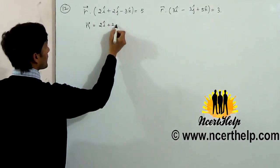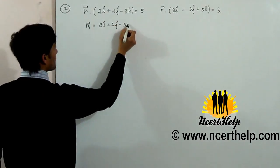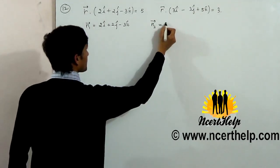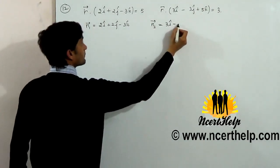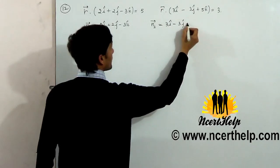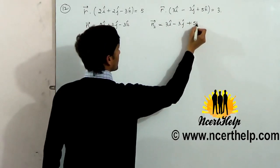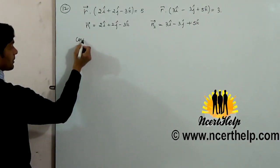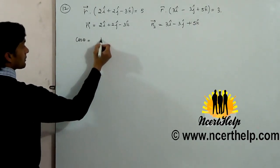is 2i plus 2j minus 3k, and normal vector to the second plane is 3i minus 3j plus 5k. Angle between two planes is given by the formula cos theta is equal to